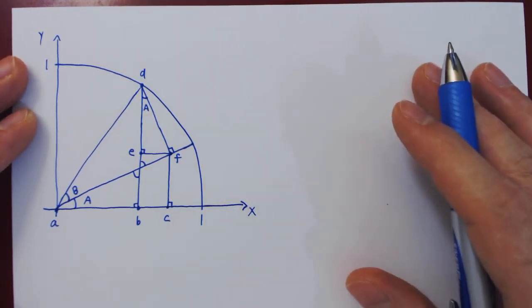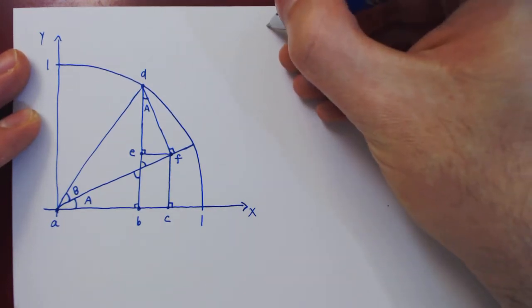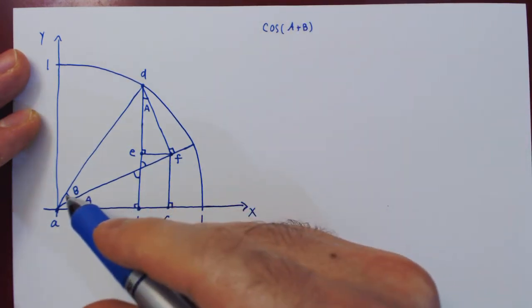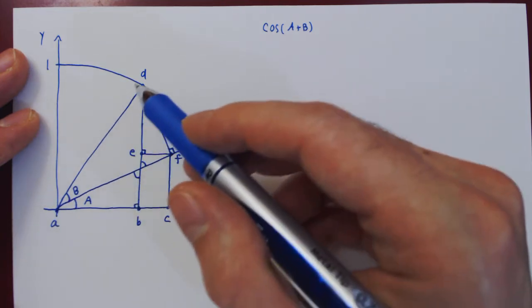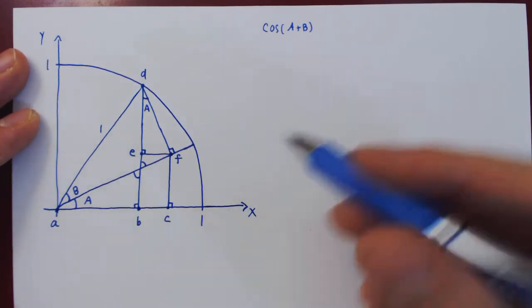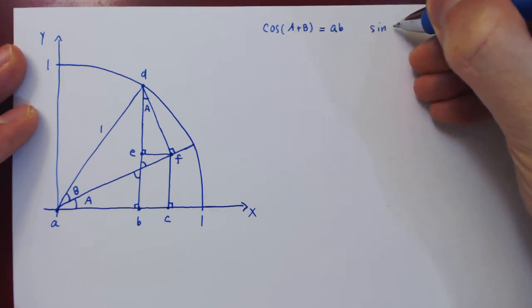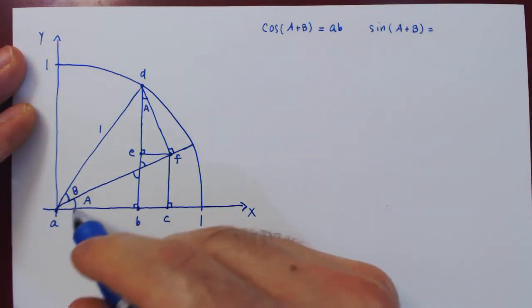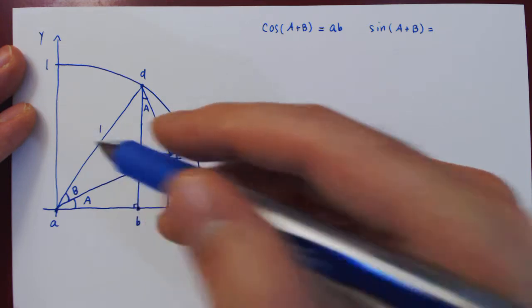Let's first consider the cosine and sine of A+B using the large triangle ABD. The cosine of A+B equals the adjacent side AB over the hypotenuse, which is 1 since we have a unit circle. Therefore cos(A+B) equals the length of segment AB. What about sin(A+B)? The sine is the opposite side over the hypotenuse, giving segment BD over 1 — therefore sin(A+B) equals the length of segment BD.